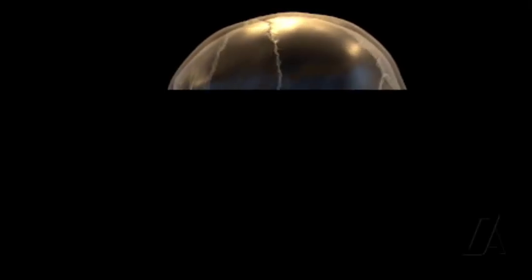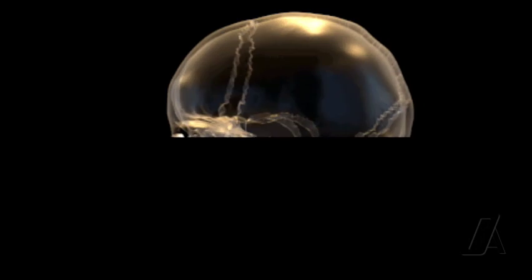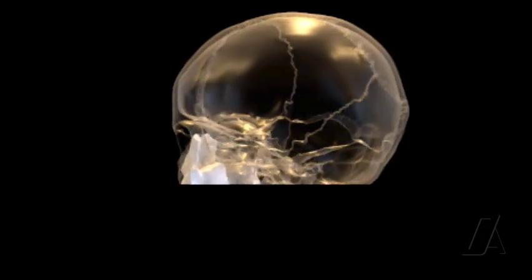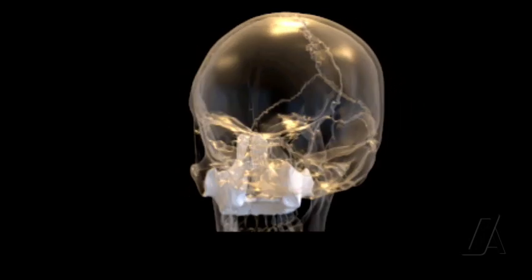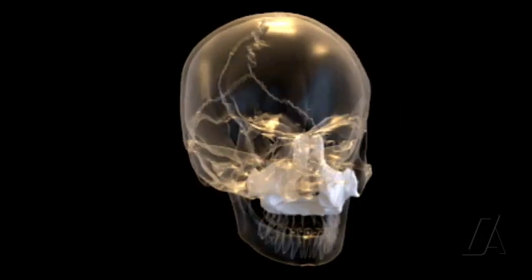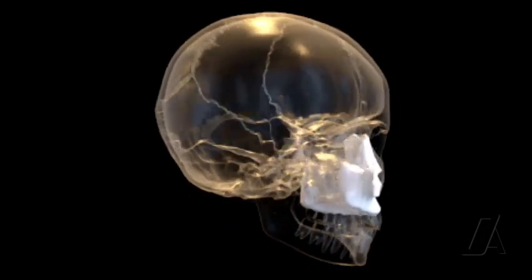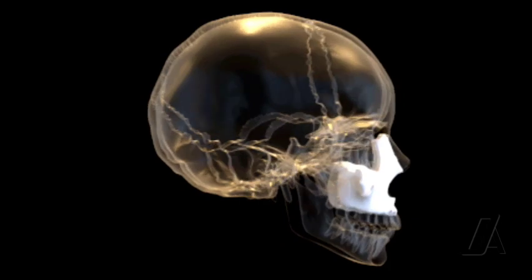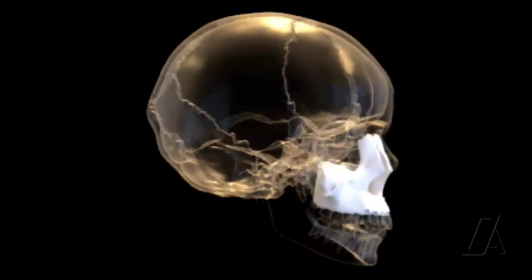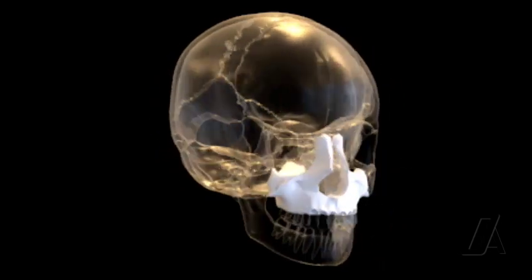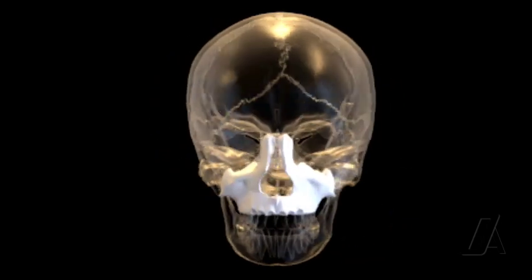Maxillae, a pair of bones on either side of the middle third of the face, is formed by intramembranous bone formation. That is, bone ossifies by deposition of bone substance over the connective tissue membrane.